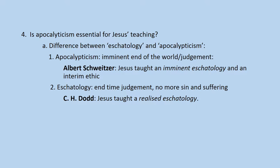Over against Schweitzer, British Cambridge scholar C.H. Dodd argued a different perspective—more the eschatological perspective—that Jesus was proclaiming an end-time judgment where there would be no more sin and suffering. Dodd taught what he called a realized eschatology: the kingdom was here, and therefore kingdom righteousness is called for. It's not an interim ethic you can live only for a short time before the end of the world; rather, because the kingdom is already here, you can live according to this kingdom righteousness.